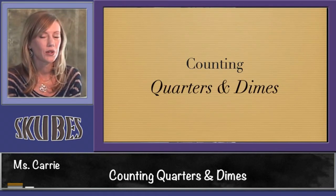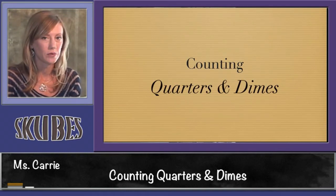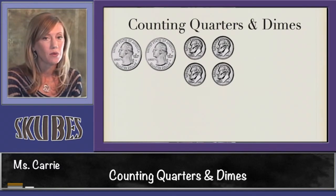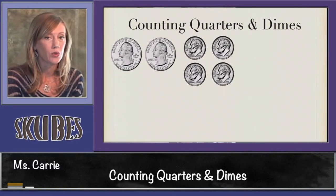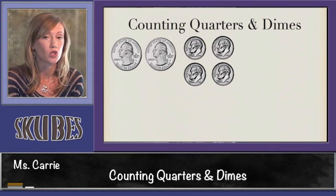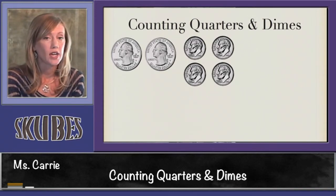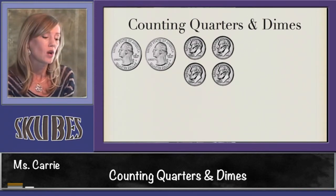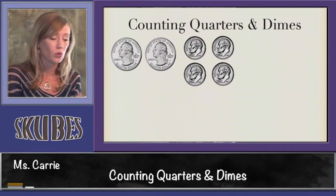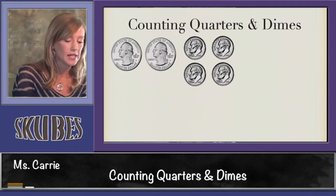This lesson is on counting quarters and dimes. When we count quarters and dimes, we need to start with quarters first because they're worth more, and then add our dimes which are worth 10 cents. Don't forget that quarters are worth 25 cents. We know that two quarters are worth 50 cents.